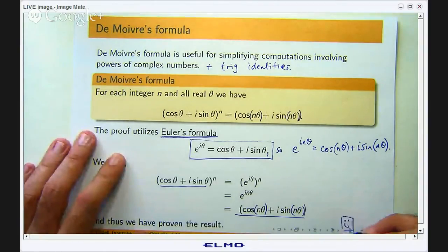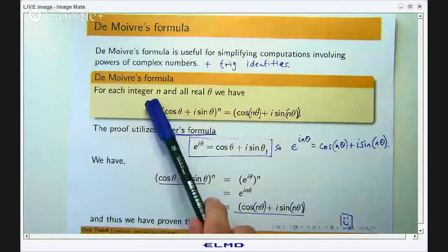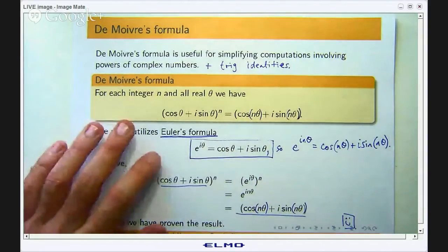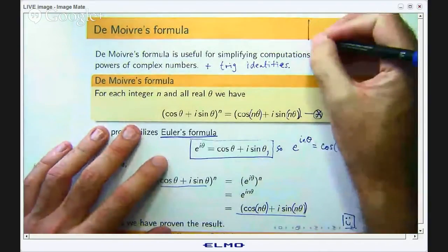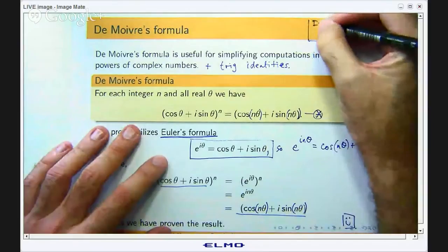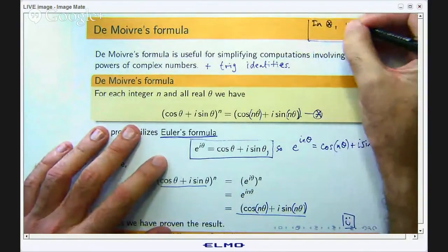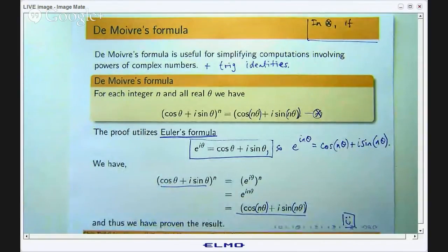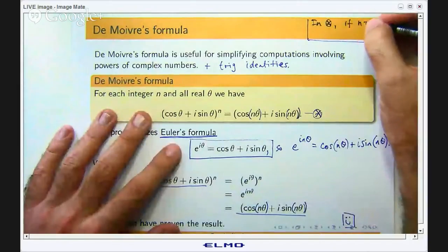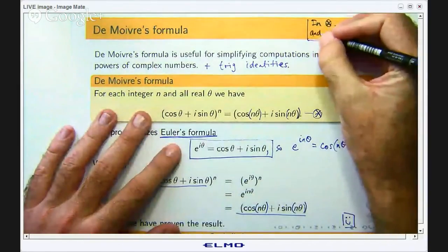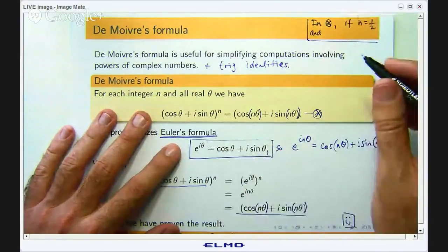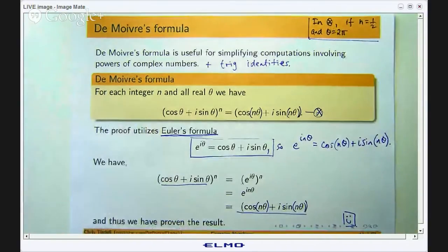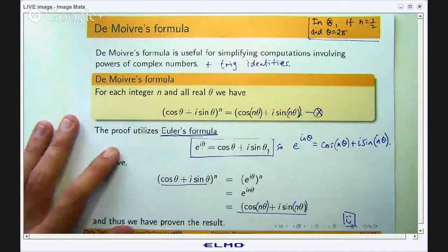Now, you might think, well, why does n have to be an integer? Well, that is a really good question. If you put in, let me just make a little note up here. In star, let us just choose a non-integer value of n. Let us say n equals 1/2 and let us take θ to be 2π. If n equals a half and θ equals 2π, then this actually does not make sense, right?